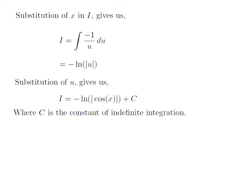As we had assumed u is equal to cosine of x, so i is equal to minus the natural log of the absolute value of cosine of x. Adding the constant c at the end — this is the arbitrary constant of indefinite integration. Never forget to add this constant at the end of any indefinite integration.